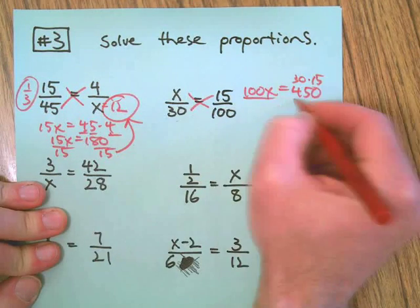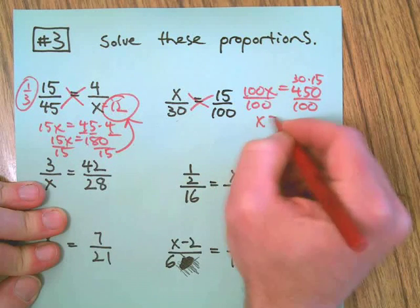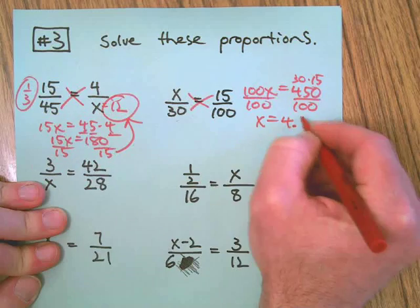That's 30 times 15 is how we got that. Divide both sides by the coefficient of X, and that means 4.5.